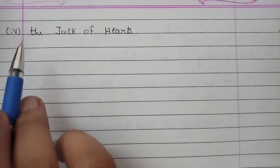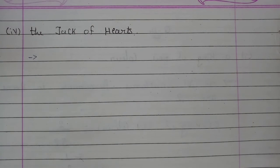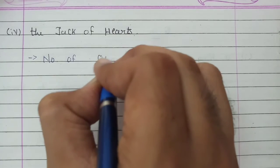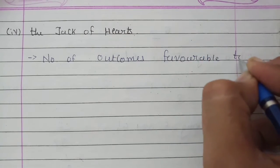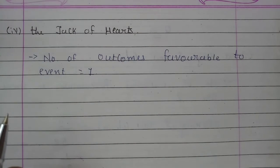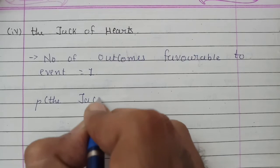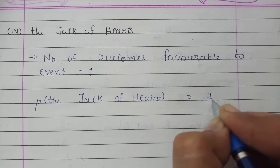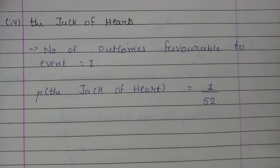Next, we have to find the probability that the card taken out is the jack of hearts. How many jacks are in hearts? Only one. So the number of outcomes favorable to the event is equal to 1. The probability of getting the jack of hearts: numerator is the favorable outcome which is 1, denominator is total outcomes which is 52. So the probability of getting the jack of hearts is 1 upon 52.